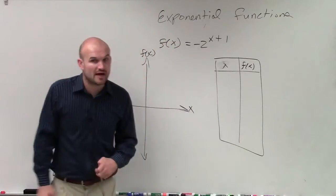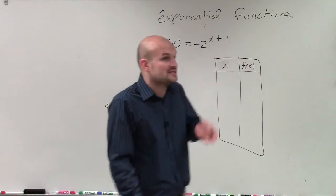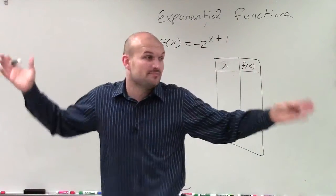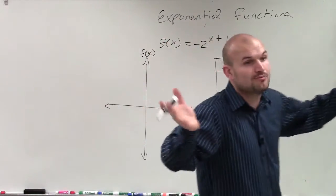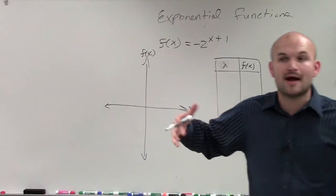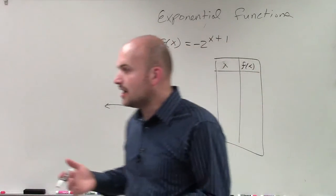So in creating our table of values, we can pick any numbers we want. We talked about the domain is from negative infinity to infinity, so you get to pick any number that you want to plug in. So what I ask yourselves is, why make it harder on yourself if you don't have to?